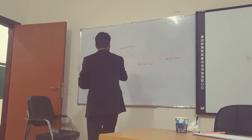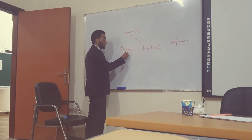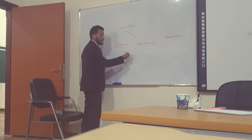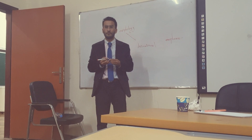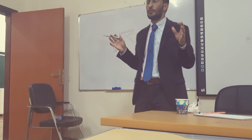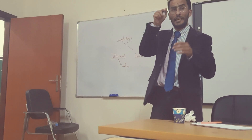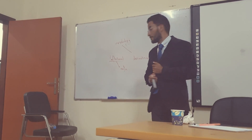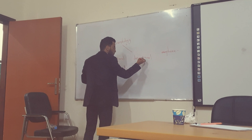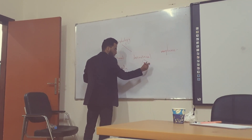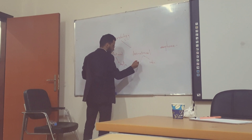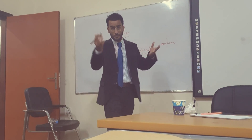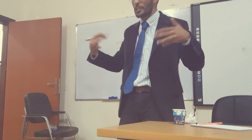So, inflectional affixation in English is only found as a suffix — that is, added at the end of the word. Inflectional morphemes in English are only found as suffixes. But derivational morphology is found in both suffixes and prefixes. All the grammatical suffixes in English mean inflectional morphology.